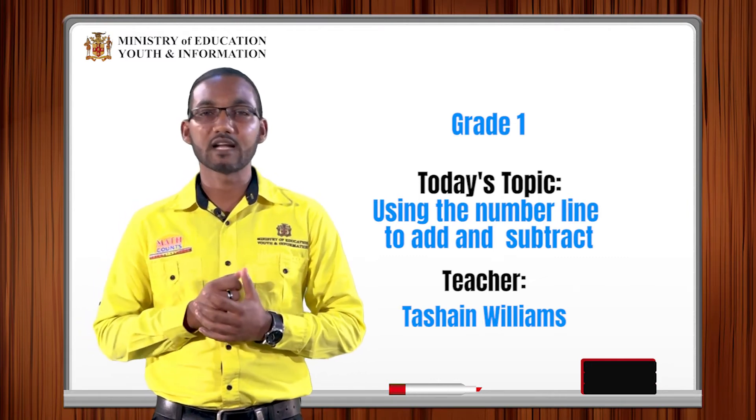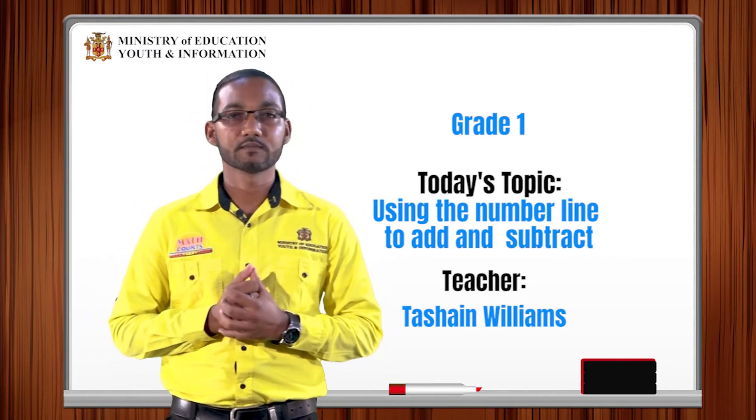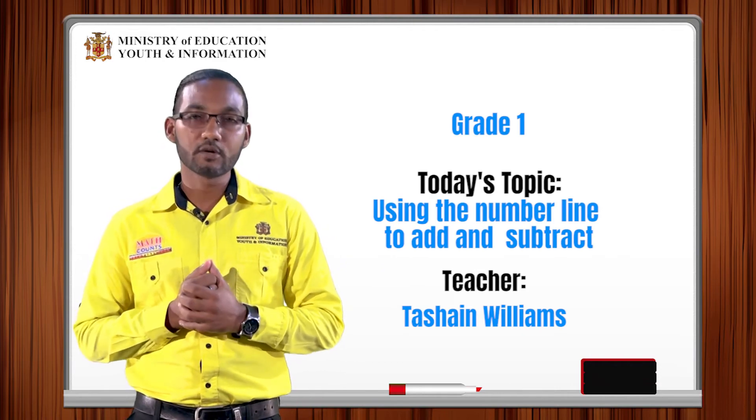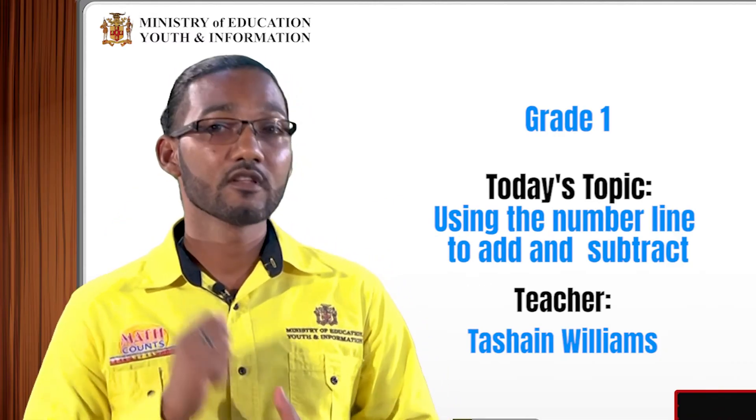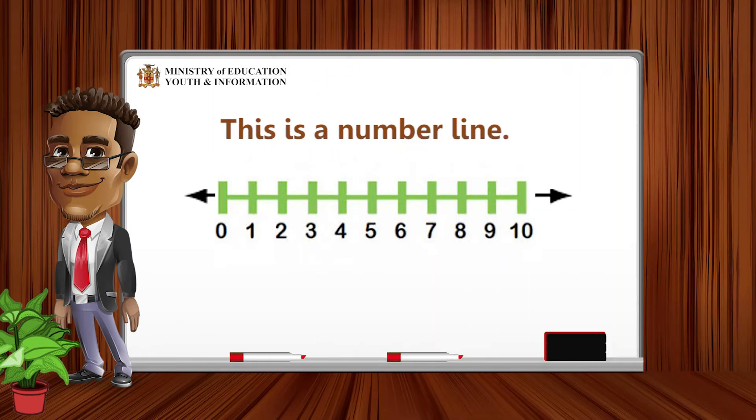Our lesson will be on addition and subtraction but we will be using the number line. Does anyone remember what the number line looks like? On your screen is an example of a number line. As the name suggests, it is a straight line with equal numbers along it, equal distances apart. On this number line, there are numbers 0 to 10.